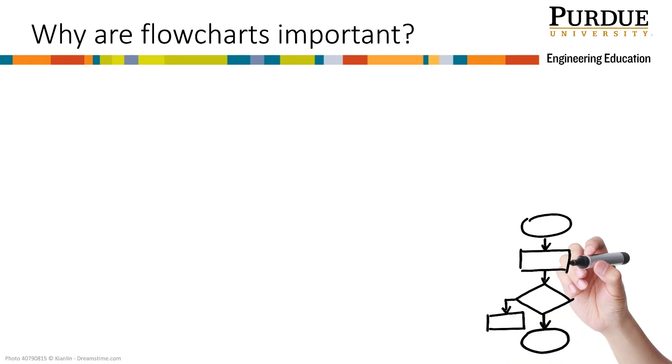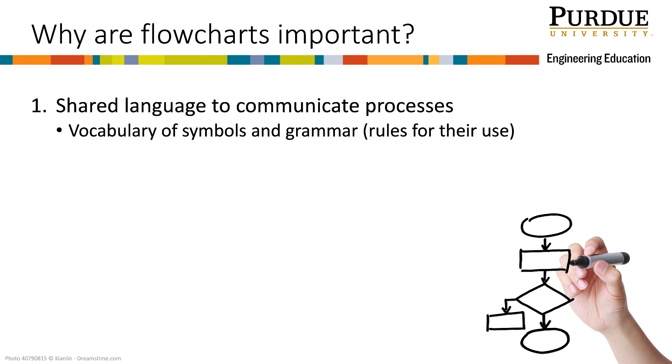So why are flowcharts important? There are three things we will consider. First, flowcharts are a shared language to communicate processes. The symbols and rules for their use allow easy communication between users of the flowcharts. Second, flowcharts convey the actions taken by a computer program and the flow of execution of these actions.